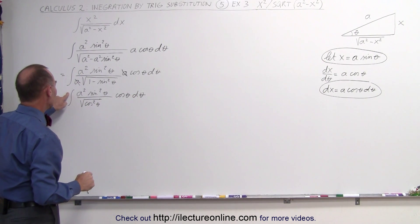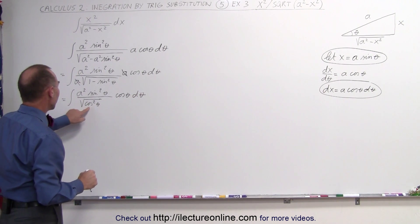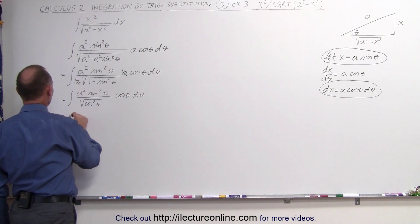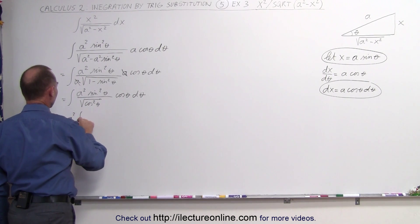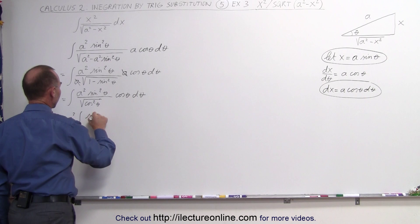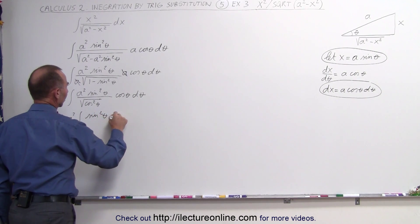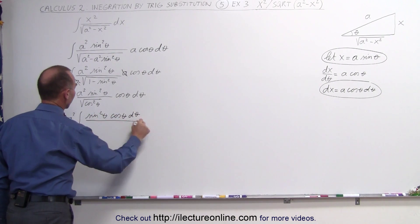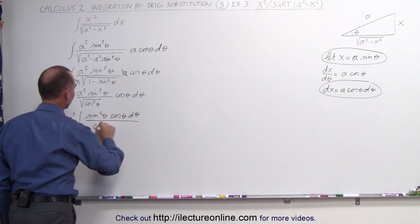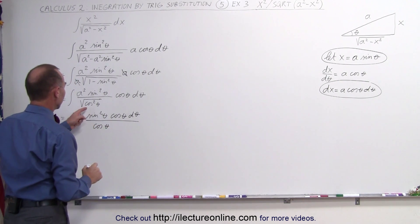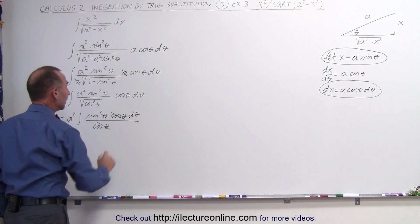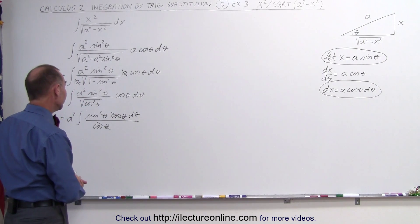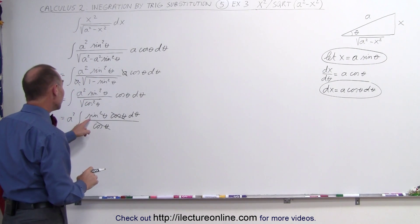We can take the a out of the integral sign, and the square root of cosine squared of theta becomes the cosine of theta. This is equal to a squared times the integral of the sine squared of theta times the cosine of theta dθ, divided by the cosine of theta. Then this cosine cancels out with that, and now it simply is the integral of the sine squared of theta.